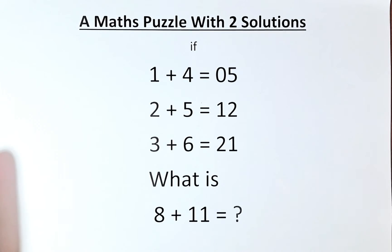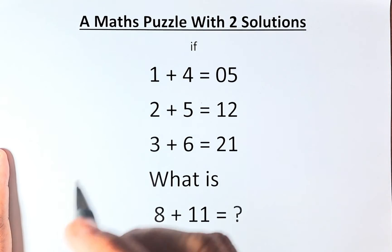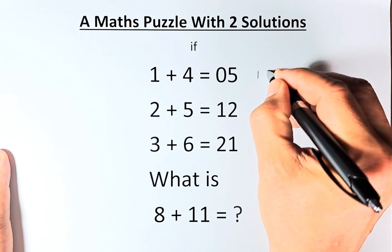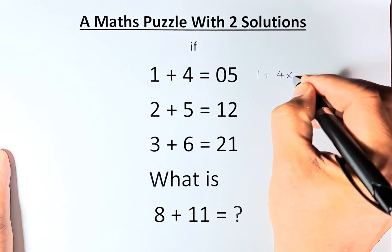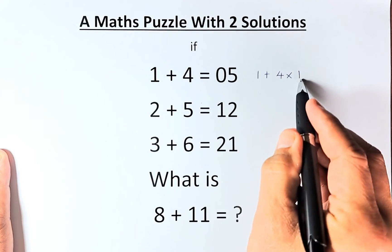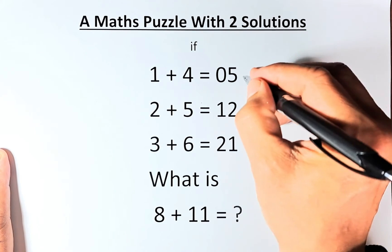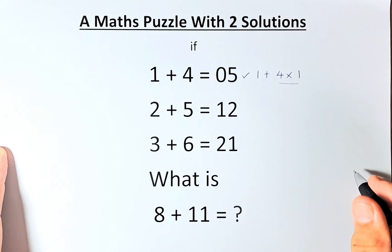So the second solution is you are going to add and then multiply by the first number. What I mean is, to get 5, you take 1 plus 4 multiplied by 1. So you multiply by the first number. So 4 times 1 is 4 plus 1 and the answer is 5.